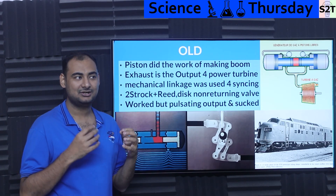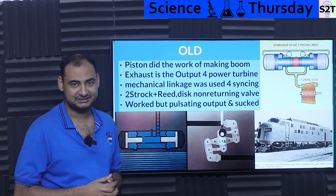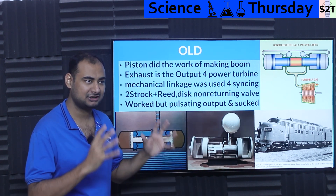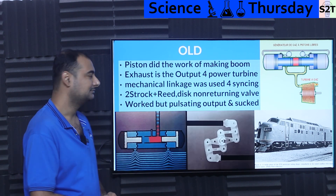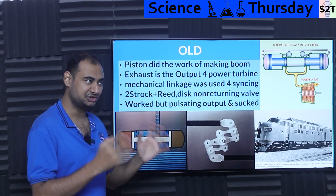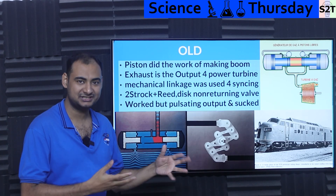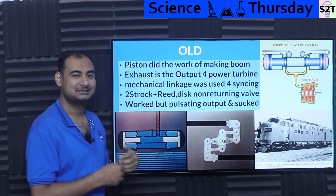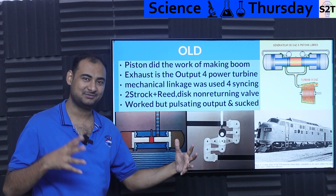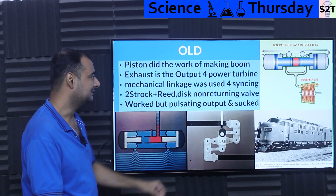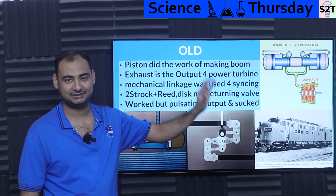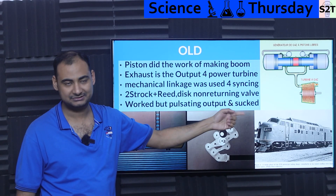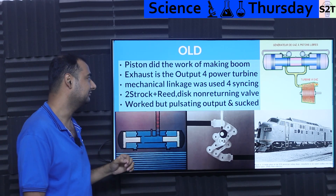Somebody came up with the idea: what does a turbine need? It needs massive flow — a huge amount of hot gases going through it. What is a piston good at? Making huge amounts of hot gases. In fact, it has so much energy you can spin an air compressor from it — we call it a turbo. So the idea was: your piston only creates hot gas, and a turbine drives your load.